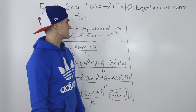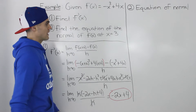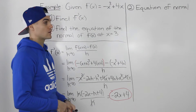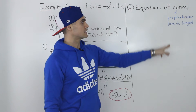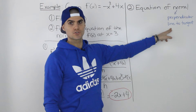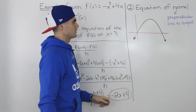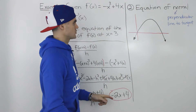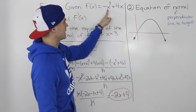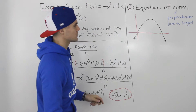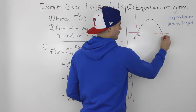Moving on to the second part, we need to find the equation of the normal of f(x) at x = 3. A normal is basically a line perpendicular to the tangent of a function at a specific x value. Let's show this visually — this here represents the function -x² + 4x.